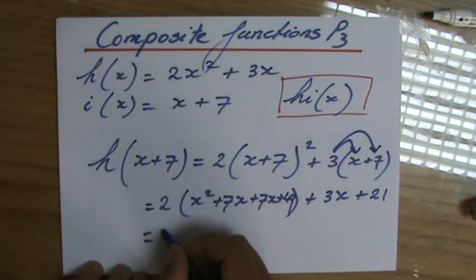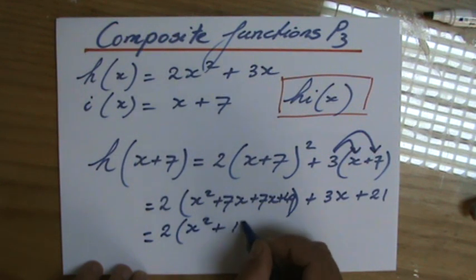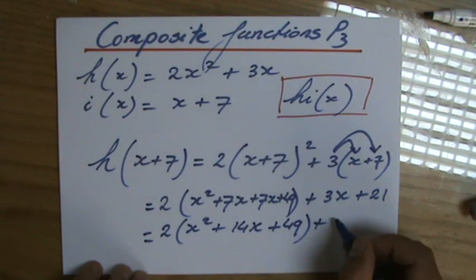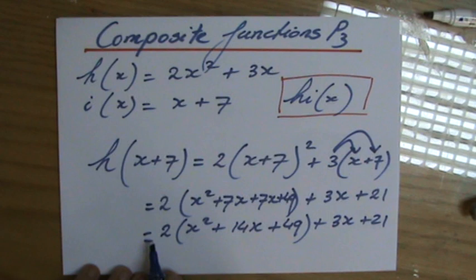Now before I expand these brackets, let me simplify that: 2(x squared plus 14x plus 49) plus 3x plus 21. Now I'm going to expand these brackets multiplied by 2.